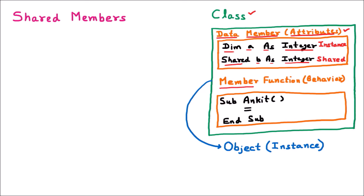The next member of the class is called the member function, also referred to as the behavior. Whenever we create any type of procedure — like 'Sub' with a name ending with 'End Sub' — or a function, we know that procedures return nothing and functions return something. Any kind of procedure or function declared inside a class is called a member function. With the combination of data members and member functions, we create the class.